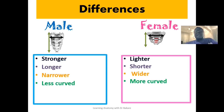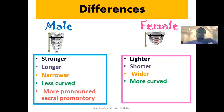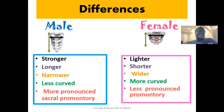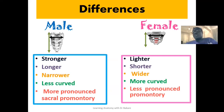All these features are to suit the vaginal birth process in females. The male sacrum is seen to have a more pronounced sacral promontory while the female sacrum is seen to have a less pronounced sacral promontory. We've highlighted the significance of the prominence created by the sacral promontory in our previous lecture on the sacrum — please check that lecture to keep yourself updated.